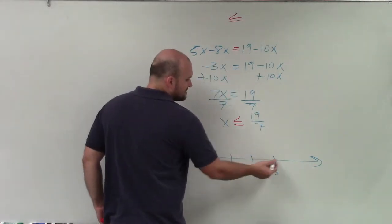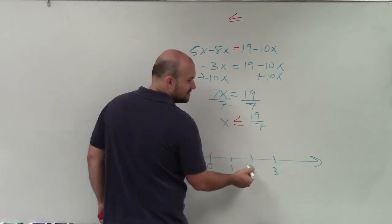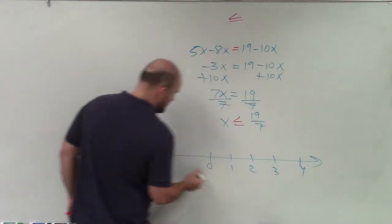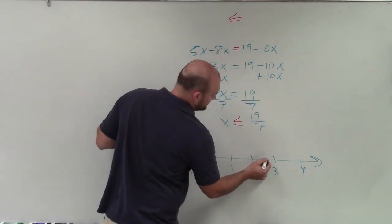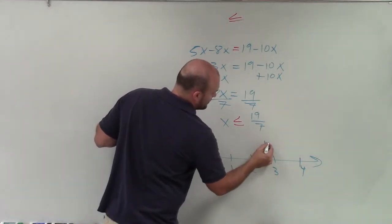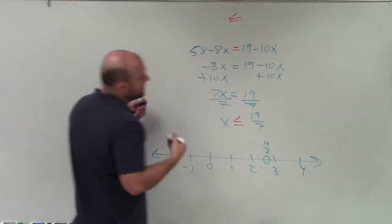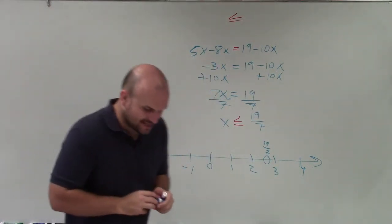Remember, I know that 19 divided by 7 has to be between 2 and 3. Here's 4 and negative 1. So I'm just going to say, here's 19 over 7. And you could obviously use your calculator and estimate what exactly it's going to be.